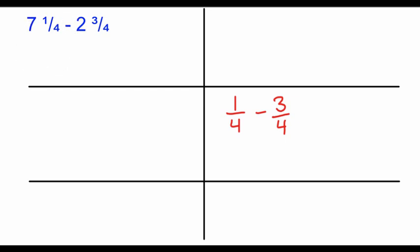We practiced this in the video Renaming Mixed Numbers, the video right before this one. We're going to take 7 and 1 fourth and rename it. I'm going to change 7 to 6 and 4 fourths. Why am I doing 4 fourths? Because our denominator is 4, we want a whole to be 4 out of 4.